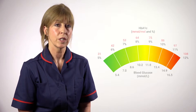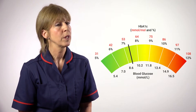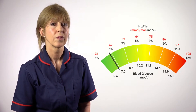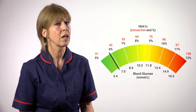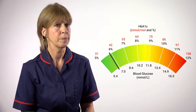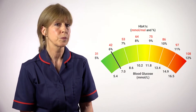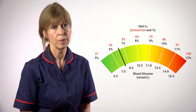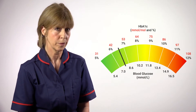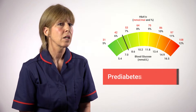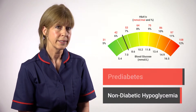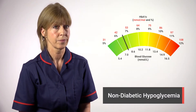A normal HbA1c result is a reading below 41 millimoles per mole. A person would be classed as high risk of diabetes if their result was between 42 and 47 millimoles per mole. This is classed as pre-diabetes or non-diabetic hyperglycaemia.